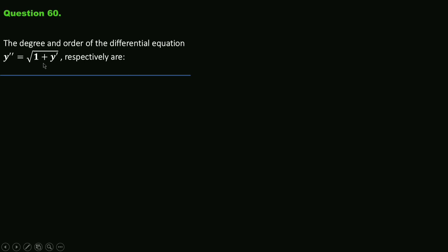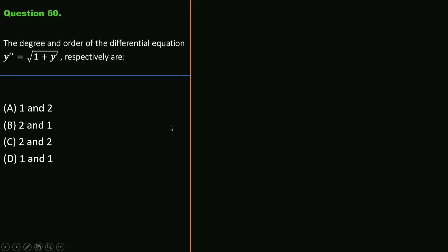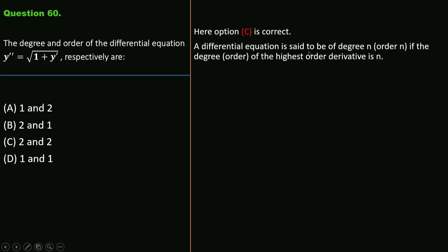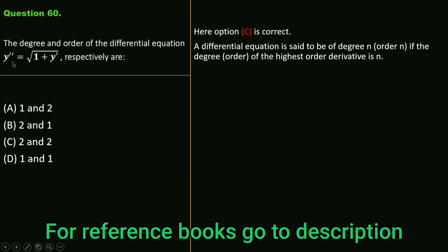Factoring out -3 gives -3(sin²3x + cos²3x) = -3·1 = -3. Hence option A is correct. Question 60: The degree and order of the differential equation y'' = √(1 + y') are respectively given by options 1 and 2, 2 and 1, 2 and 2, or 1 and 1. Option C is correct. Squaring both sides gives (y'')² = 1 + y'. The highest order derivative is y'' (order 2) and its power is 2 (degree 2), so order = 2 and degree = 2.